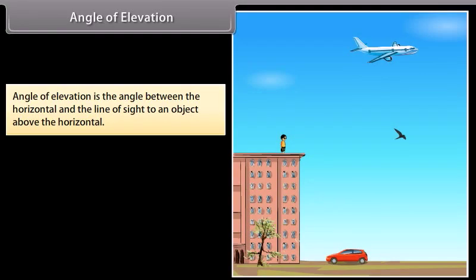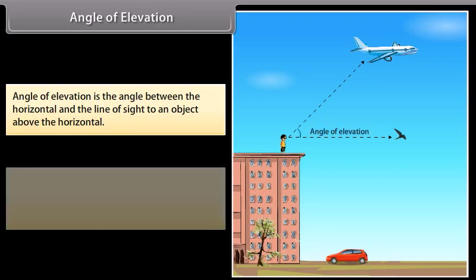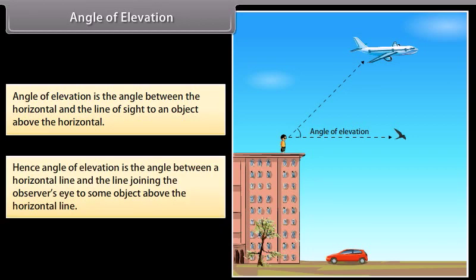Angle of elevation is the angle between the horizontal and the line of sight to an object above the horizontal. Let us take an example to understand this. In this picture, an observer is standing at the top of a building and looking straight ahead at the birds which are in the horizontal line. The observer must raise his eyes to see the airplane which is in the slanting line. This line is also called as line of sight. The angle formed between the two lines is called the angle of elevation. Hence, angle of elevation is the angle between a horizontal line and the line joining the observer's eye to some object above the horizontal line.